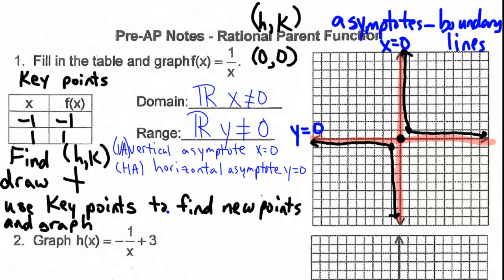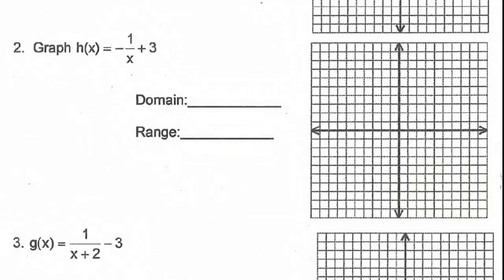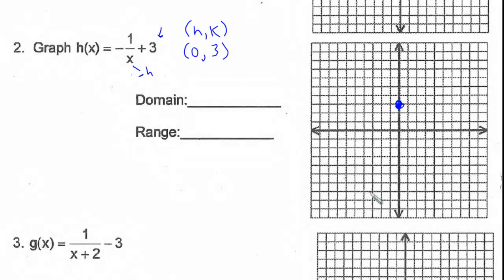Now let's look at the graph h of x equals negative 1 over x plus 3. The first thing we do is find h and k. Remember, h is always opposite of what's inside with x. So h is 0 and k is 3. Let's plot h,k and draw a cross through that point — this is our new starting point. The old key points are negative 1, negative 1 and 1, 1.